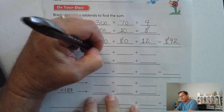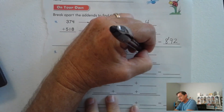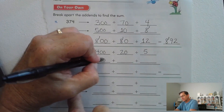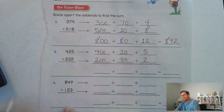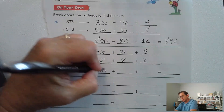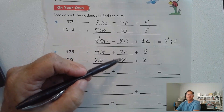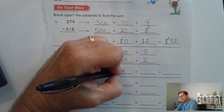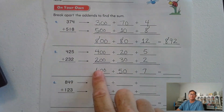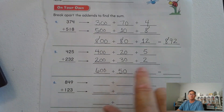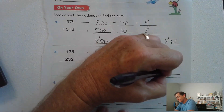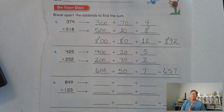Four hundred twenty-five: four hundred plus twenty plus five. Two hundred thirty-two: two hundred plus thirty plus two. Add the hundreds: four hundred plus two hundred is six hundred. Thirty plus twenty is fifty. Five plus two is seven. Put it together: six hundred plus fifty plus seven — fifty plus seven is fifty-seven — six hundred fifty-seven.